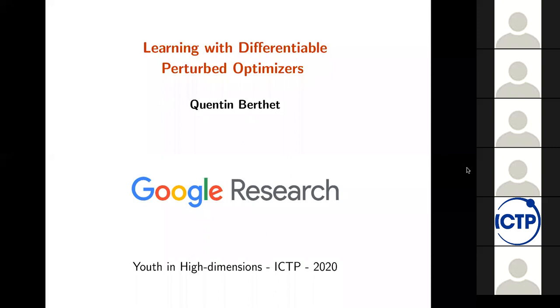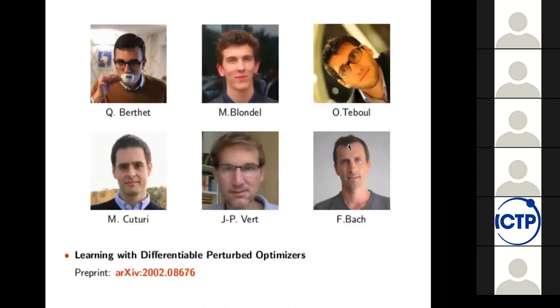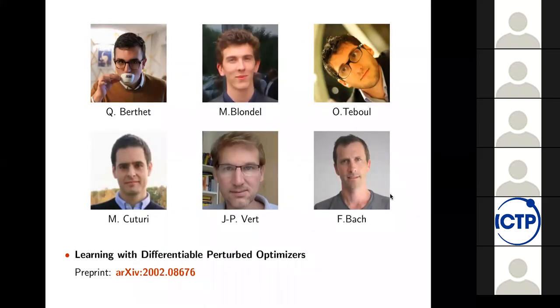So today we'll talk about recent work on learning with differentiable perturbed optimizers. This is a deep machine learning topic, but it has some relationships with statistical physics as you will see. This is joint work with some of my colleagues at Google, and also with Francis Bach, and we have a preprint available online.